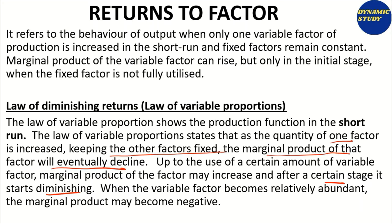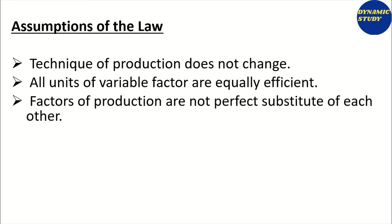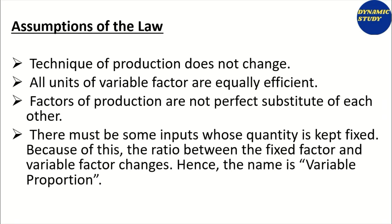When the variable factor is abundant, the marginal product becomes negative. This is basically the law of diminishing returns concept. Returns to factor means the behavior of output when only one variable factor of production is increased in the short run while the fixed factor remains constant. The assumptions include: technique of production is not changed; all units of the variable factor are equally efficient; factors of production are not perfect substitutes of each other; and there must be some inputs whose quantity is fixed, causing the ratio between the fixed and variable factor to change.